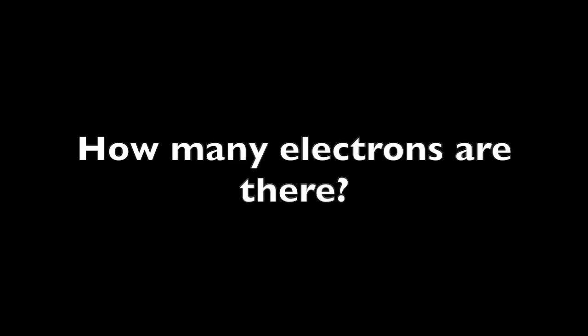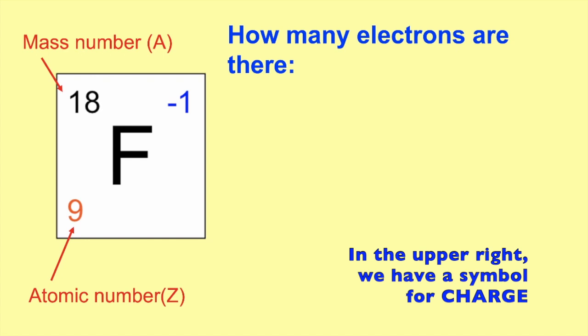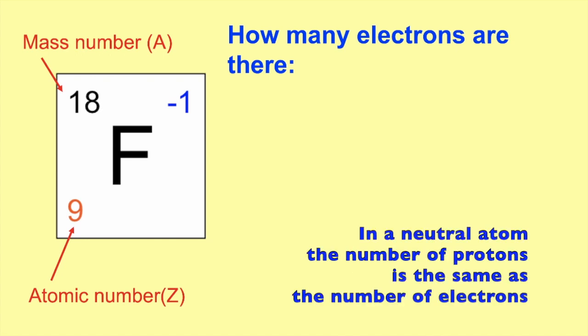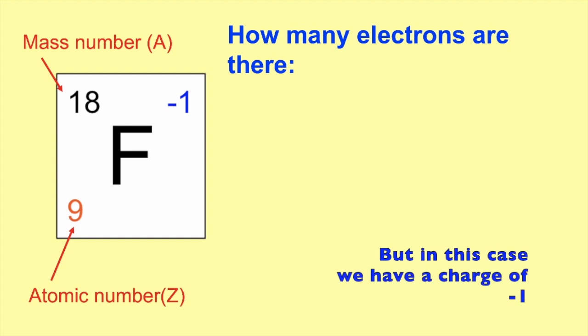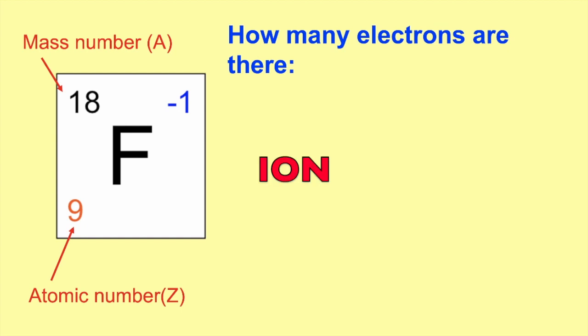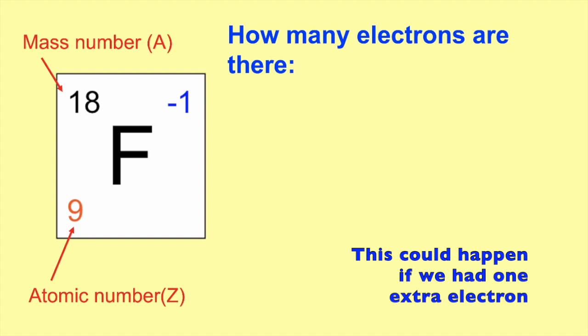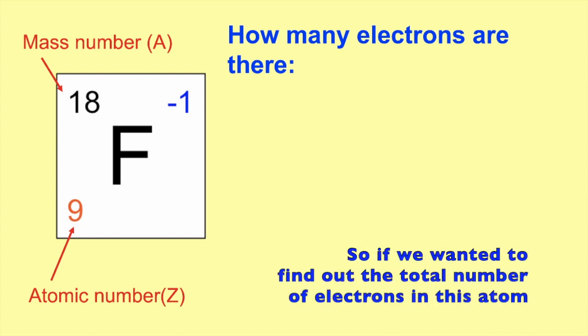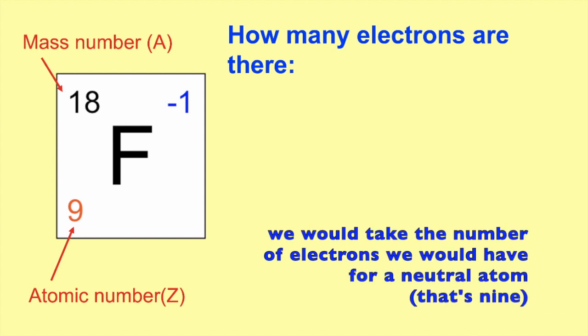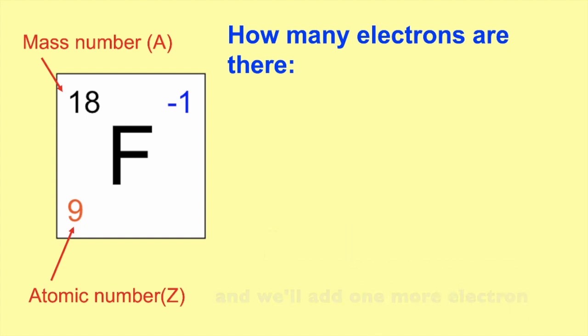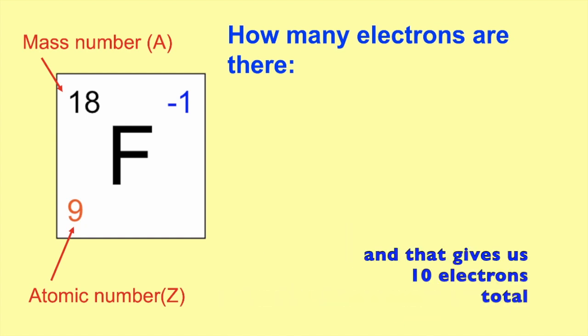Now let's talk about electrons. In the upper right, we have a symbol for charge. In a neutral atom, the number of protons is the same as the number of electrons and the charge is 0. But in this case, we have a charge of negative 1 — this is an ion, and because it's a negative ion, we call this an anion. To get a charge of negative 1, we would have one extra electron. So to find the total number of electrons, we take the 9 electrons a neutral atom would have and add one more, giving us 10 electrons total.